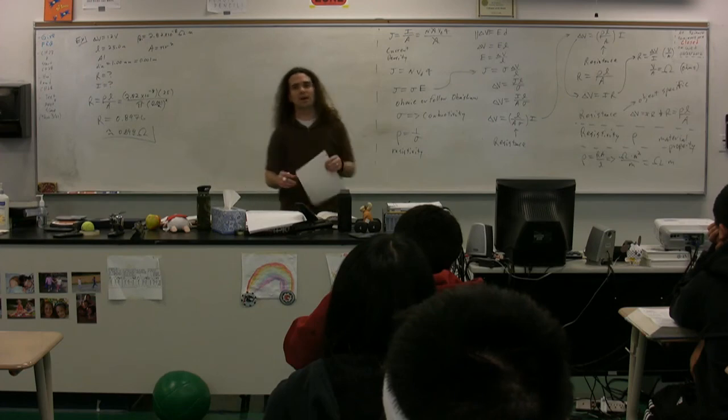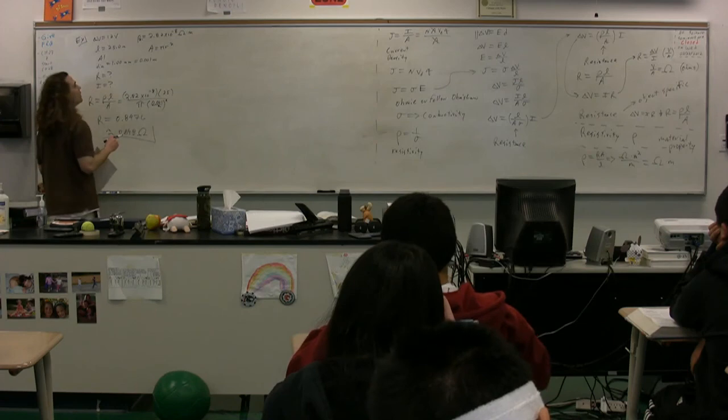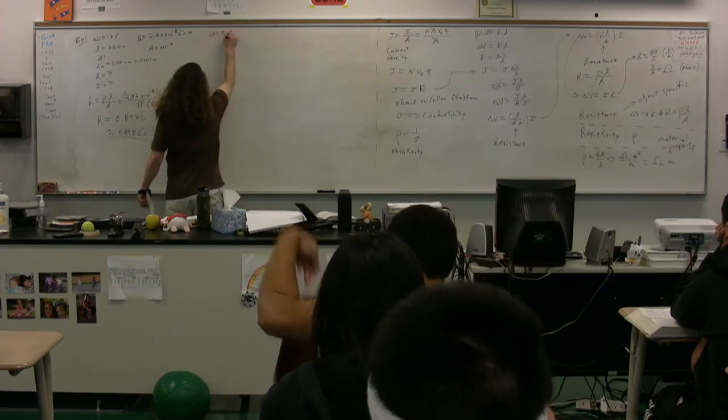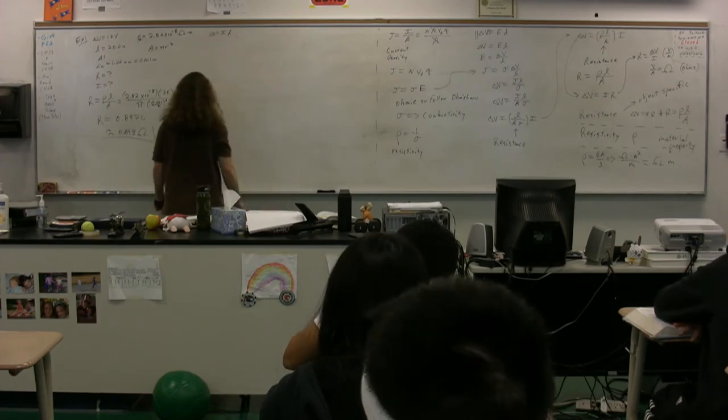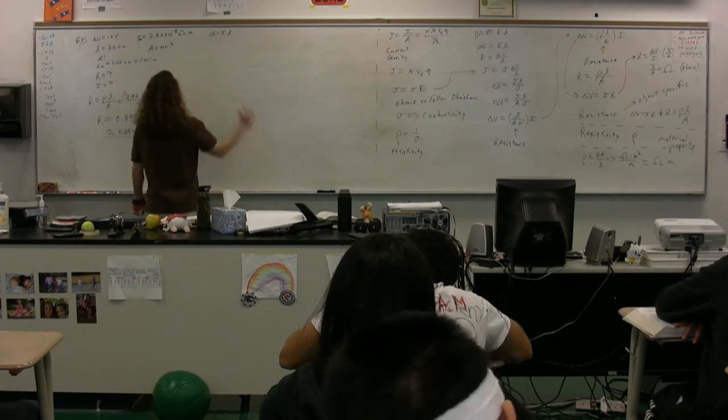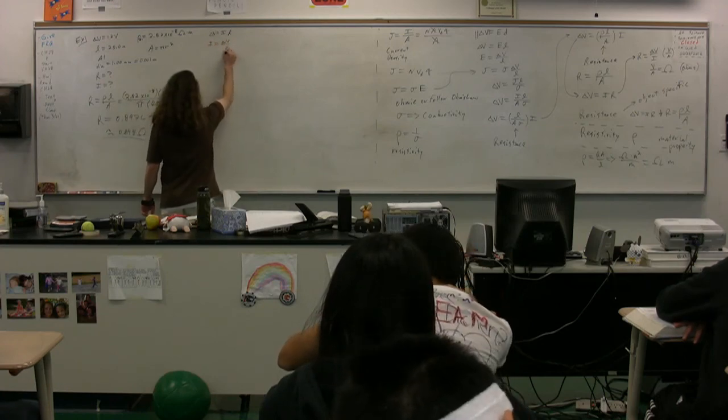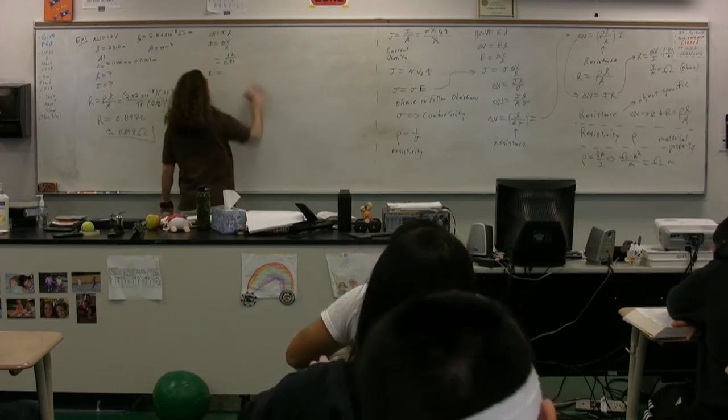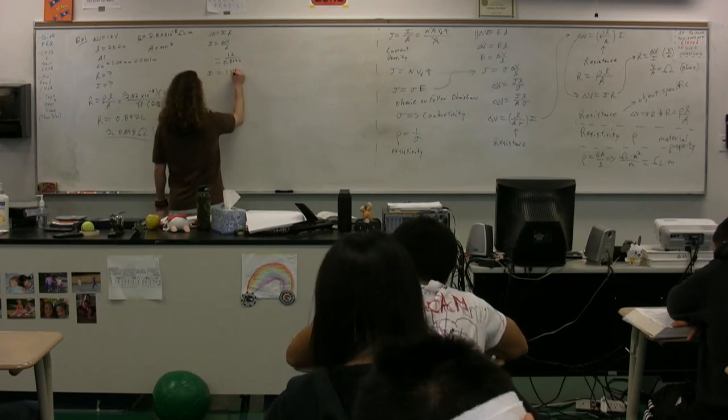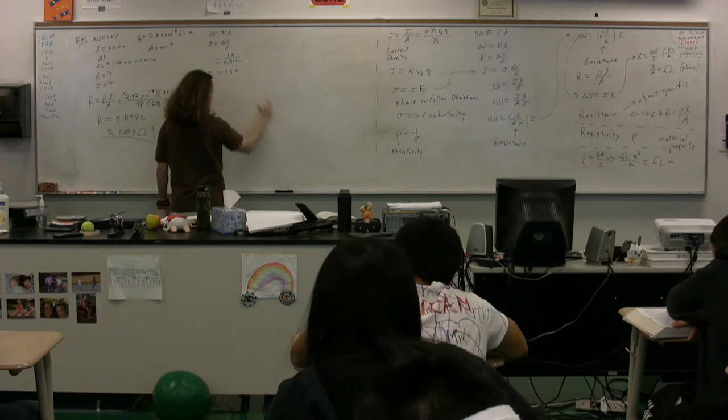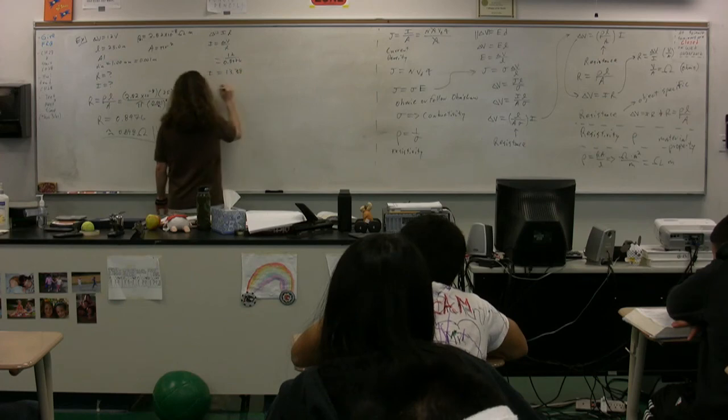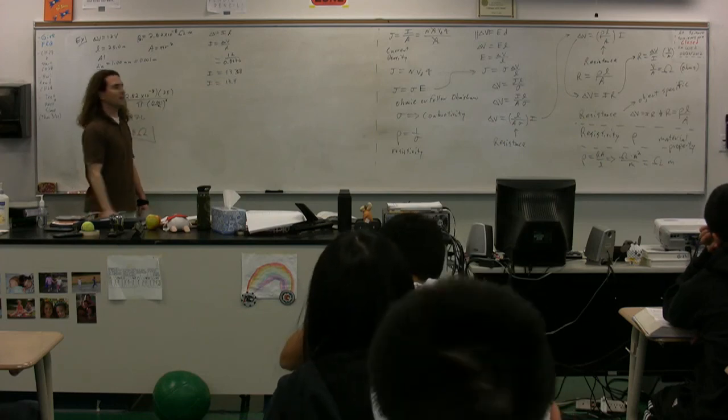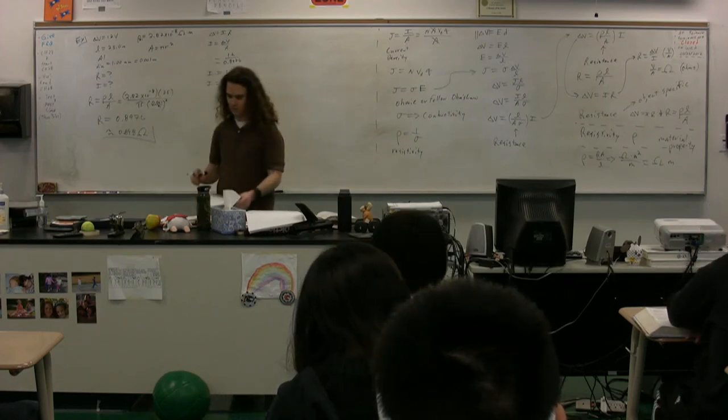We're going to figure out the current in this wire, how are we going to do that? Delta V equals IR. Give those to me without any of the letters. Tell me what it stands for. Potential difference equals current times resistance. Good. So, the current, then, is going to be equal to the electric potential difference divided by the resistance. So, 12 divided by 0.8976. Current in the wire, please. It's 13.4. Sorry, back up, it's 13.368. Thank you. Therefore, the current is equal to 13.4 amps. Just a basic problem to go through to help us understand this.